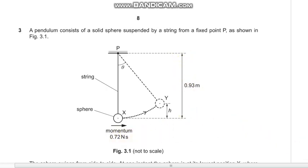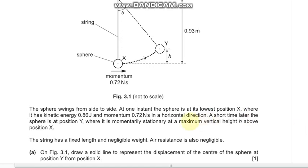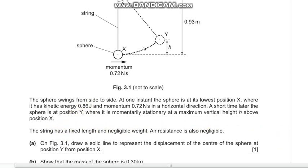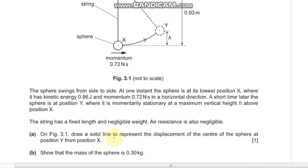Part (a) says draw a solid line to represent the displacement of the center of the sphere at position Y from X. So we have to draw the shortest line from X to Y. This is the line - it starts from the center of the sphere or circle X to the center of the sphere Y.